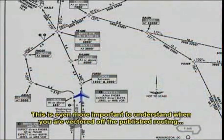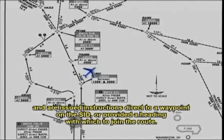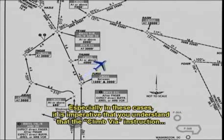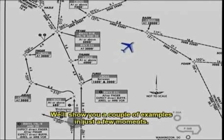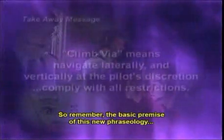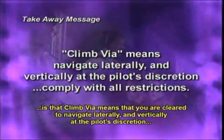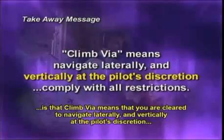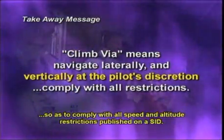This is even more important to understand when you are vectored off the published routing and are issued instructions direct to a waypoint on the SID, or provided a heading with which to join the route. In these cases, it is imperative that you understand that the climb via instruction clears the pilot to navigate laterally and vertically in order to properly join the SID profile. The basic premise is that climb via means you are cleared to navigate laterally and vertically at the pilot's discretion, so as to comply with all speed and altitude restrictions published on a SID.